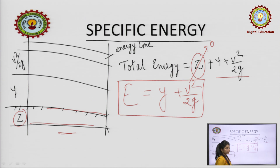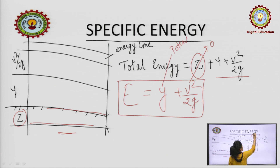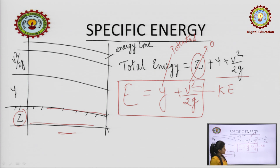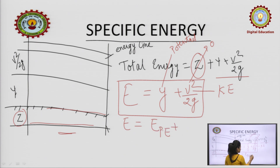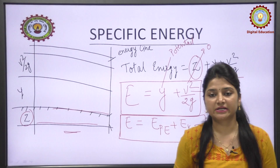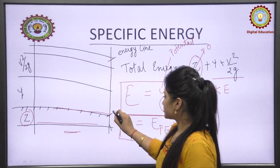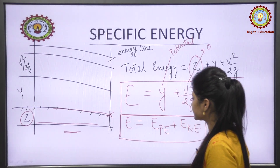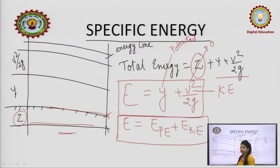From here we can conclude that y is nothing but potential energy, and v²/2g is nothing but kinetic energy, giving us the idea that specific energy comprises potential energy plus kinetic energy. Although specific energy keeps on changing — it may increase or decrease based on the elevation of the surface — it behaves as uniform when taking datum as zero.